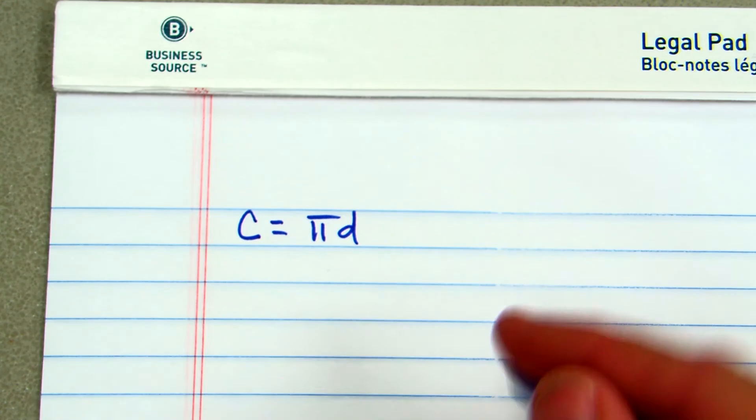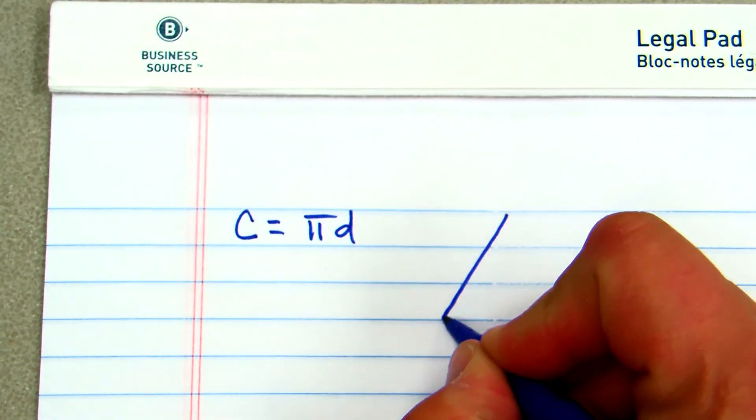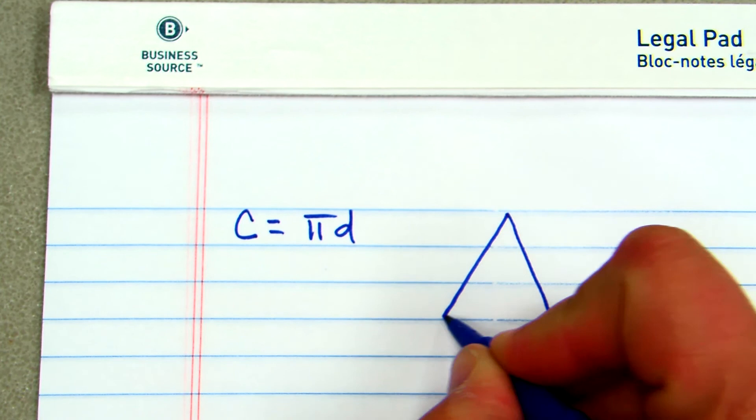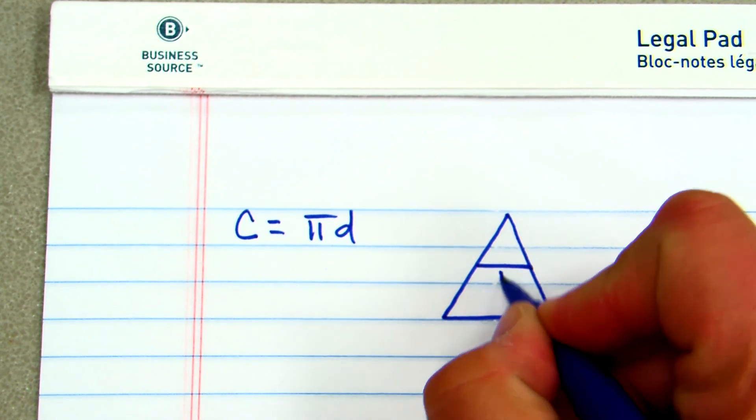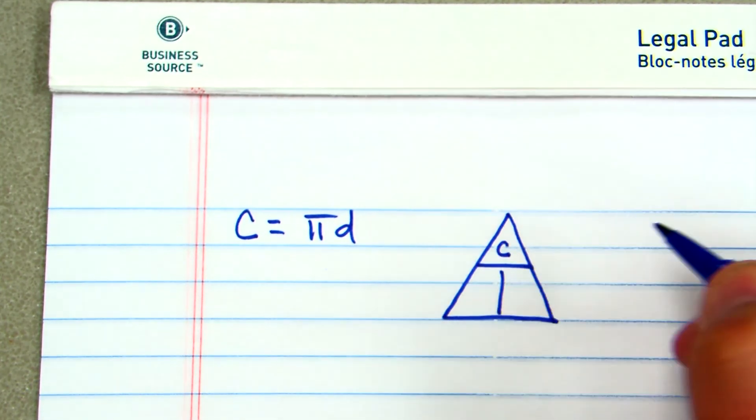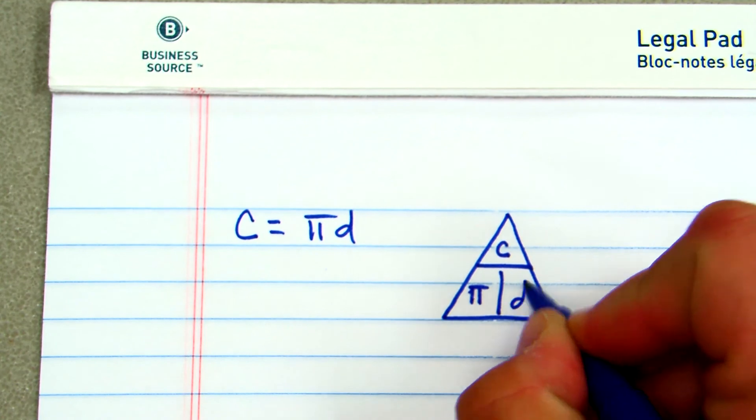And the method that we use is called the triangle method. And all you do is draw your triangle, draw a t in the middle, put your c at the top, your pi right here, and your d right here.